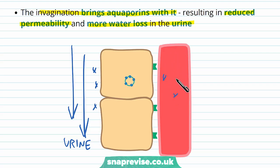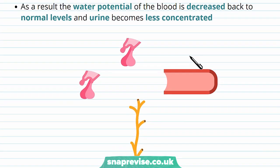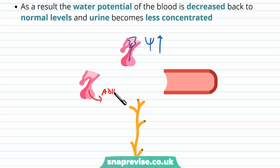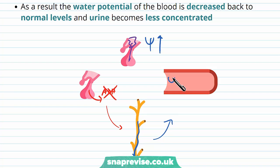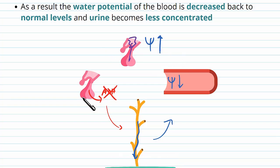Because we already have a high water potential in the blood, we don't want any more water reabsorbed. To summarise this second feedback loop: the water potential was raised, osmoreceptors detected this and inhibited the posterior pituitary gland from releasing ADH. Without ADH acting through the blood, the collecting duct retracted all its aquaporins, water stayed in the filtrate and was lost in the urine, and the water potential of the blood therefore went back down to normal levels. This is all one big negative feedback loop.